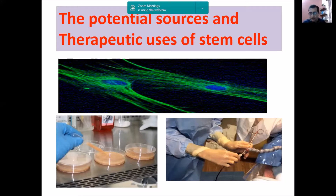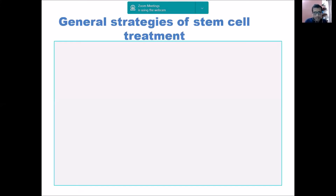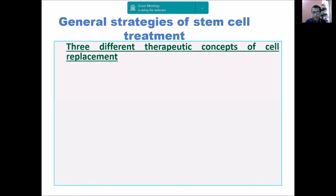We will discuss what different researches are going on. In most cases, they are at the research or trial level. We will also discuss what types of stem cells are used. Generally, the strategies we use for stem cell therapy are of three main types.